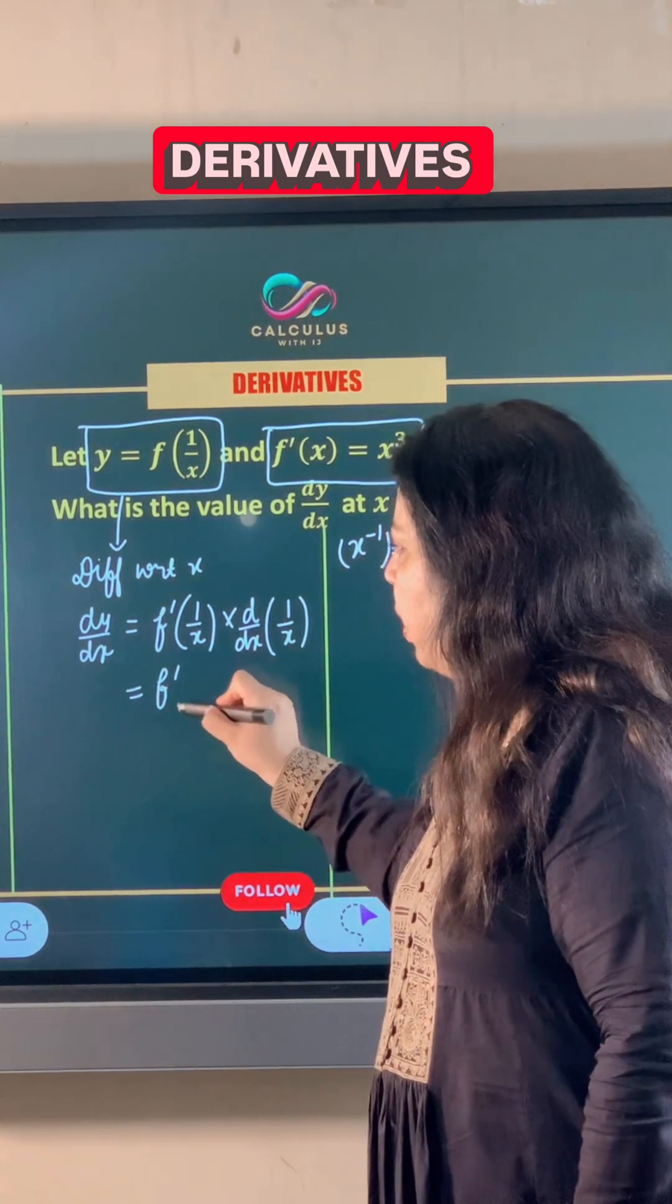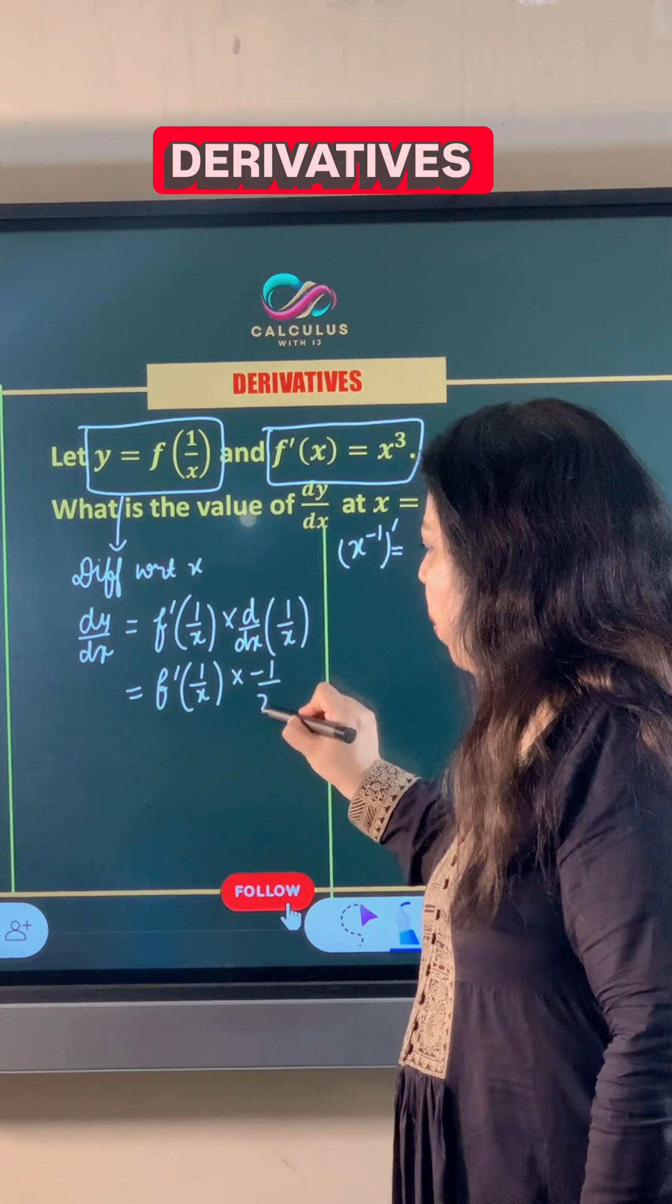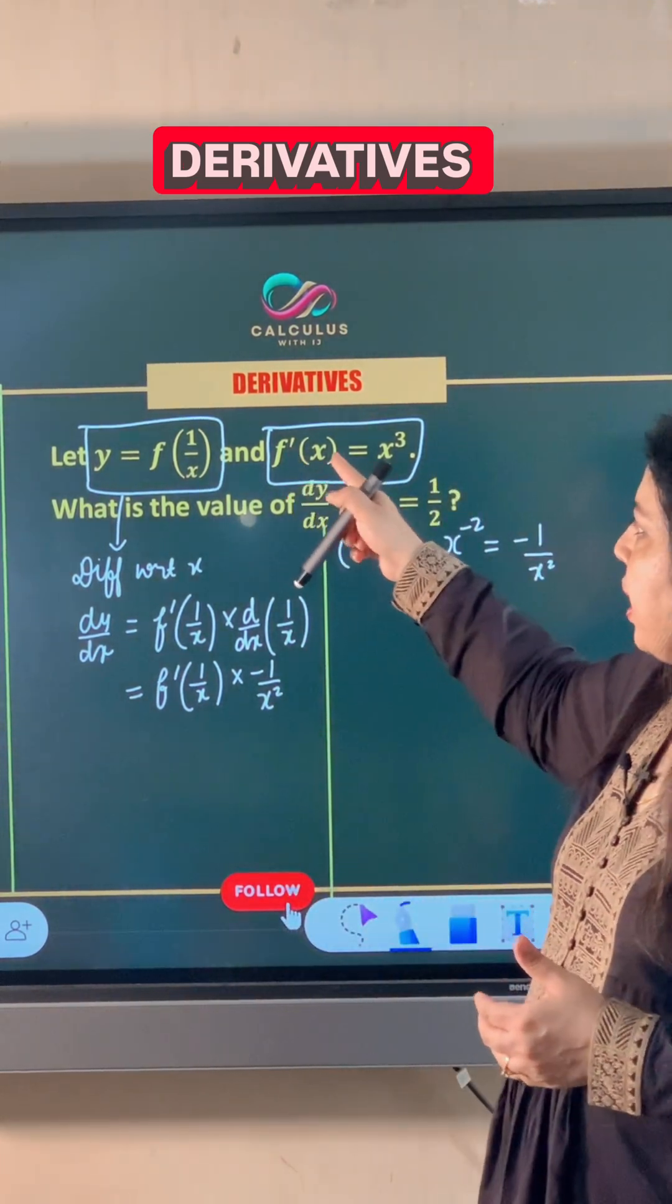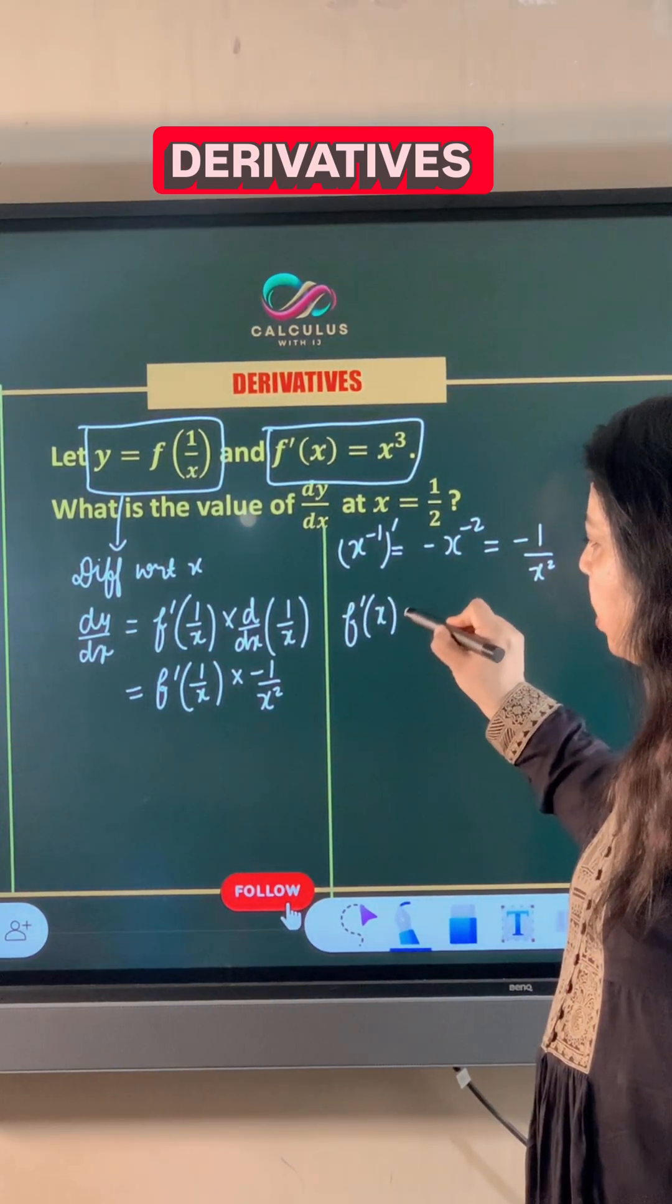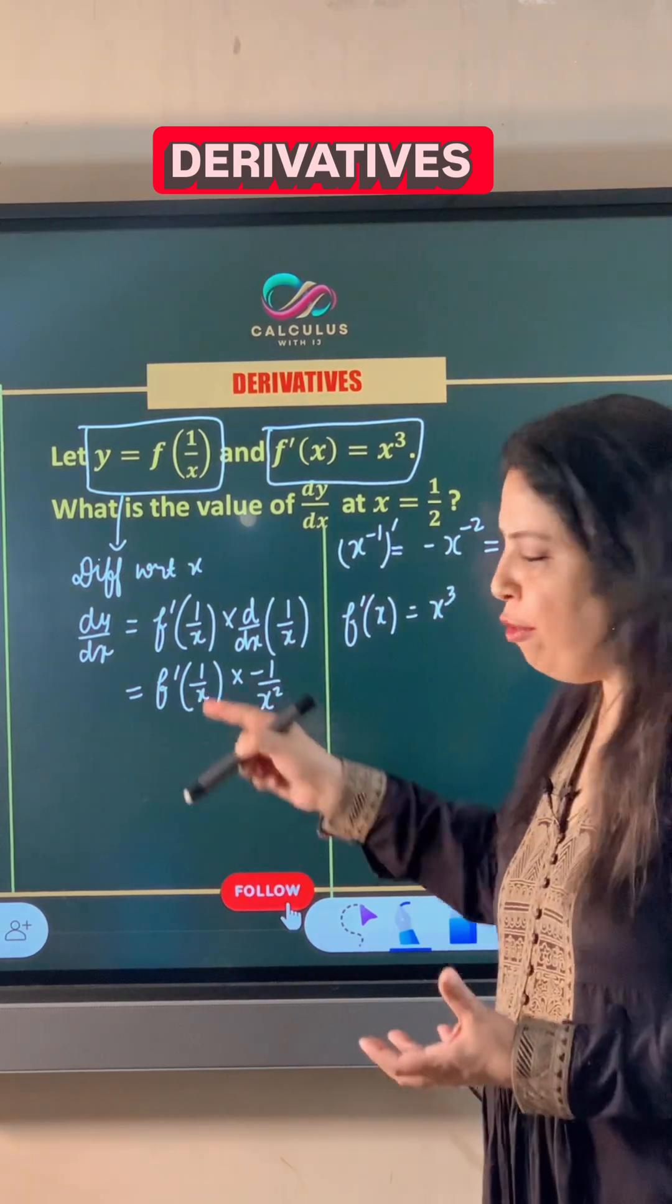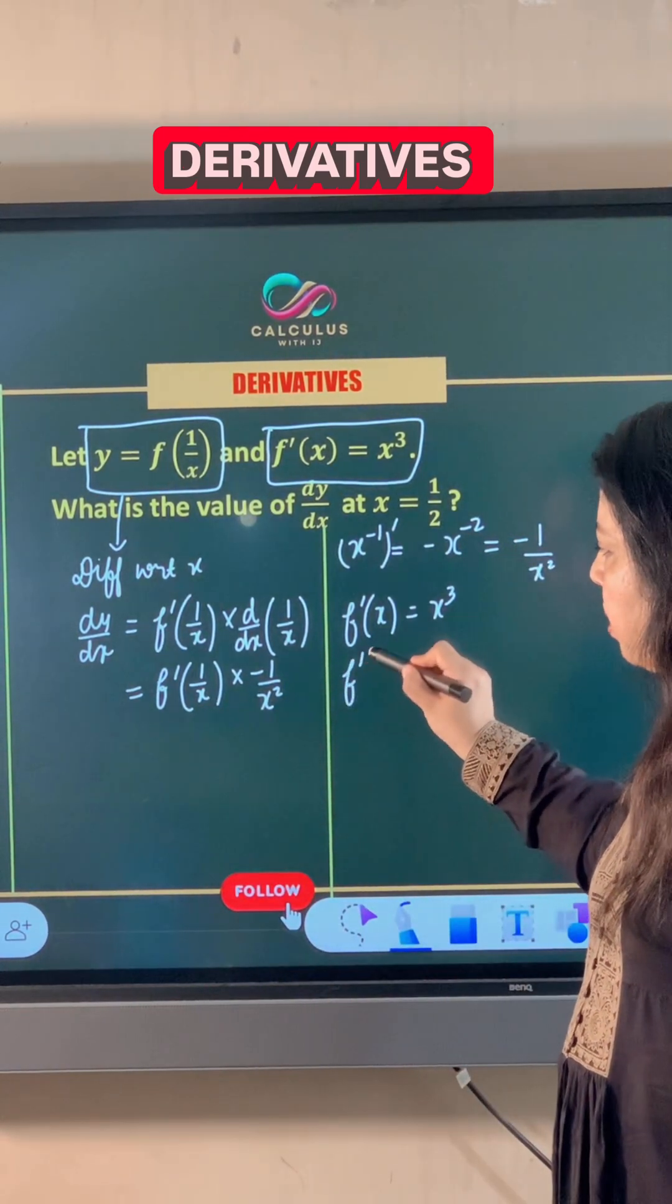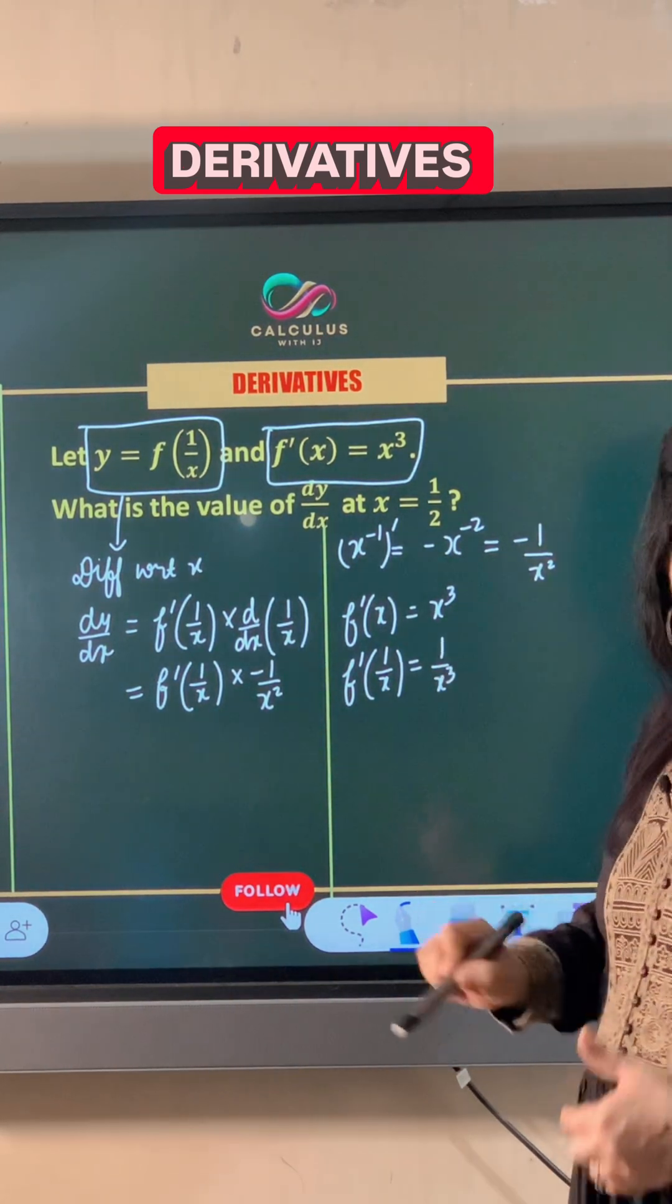So this becomes f dash of 1 by x multiplied by minus 1 divided by x square. Now f dash x is given as x cube. If we replace x by 1 upon x here, we get 1 upon x cube.